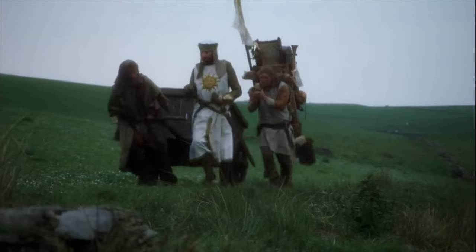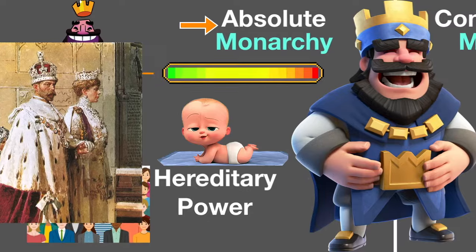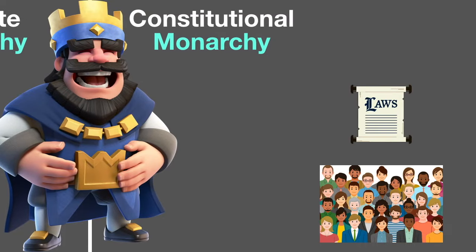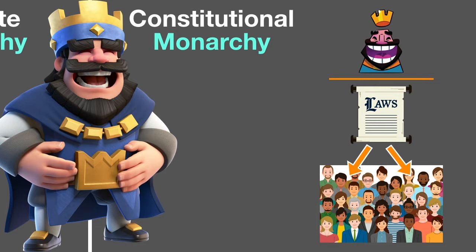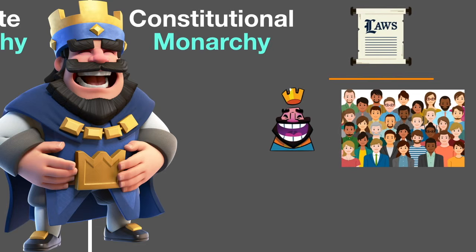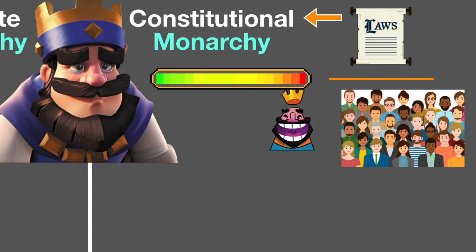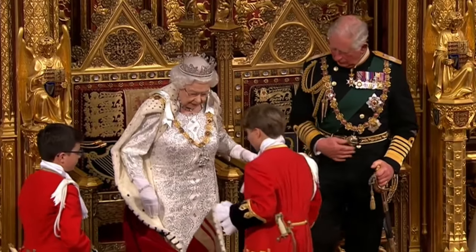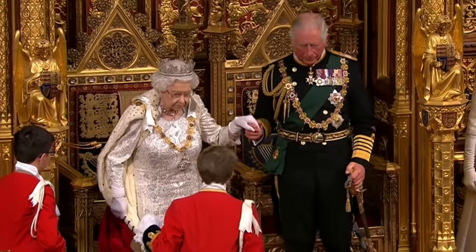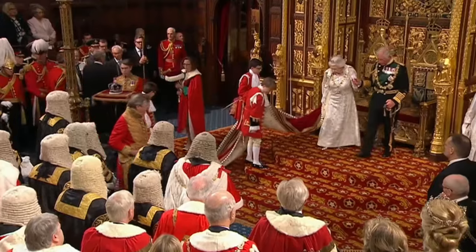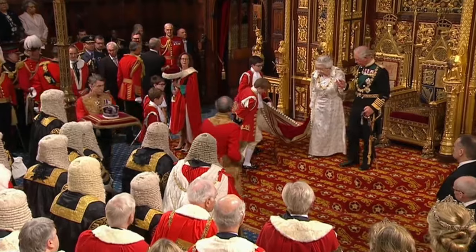Nowadays, most forms of government that include a monarch are actually constitutional monarchies. A constitutional monarch has to follow the laws, or the constitution of the land, which severely limits their power. If a king has to follow the same rules as you and I, what really makes them the king? Most constitutional monarchs today are more like ceremonial leaders of the country — somebody's got to wear the crown jewels and invite other world leaders into the castle.